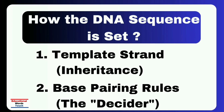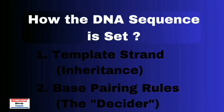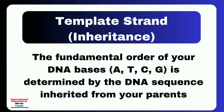The fundamental order of your DNA bases A, T, C, G is determined by the DNA sequence inherited from your parents. When a cell divides, the existing DNA double helix unwinds and each single strand acts as a template for building a new complementary strand.